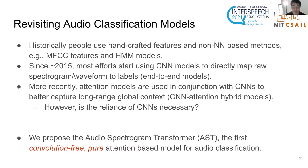Historically, people used handcrafted features and non-neural-network-based methods. And since 2015, most efforts started using CNN models to directly map raw spectrum or waveform to labels. And more recently, attention models are used in conjunction with CNNs to better capture long-range global context. We call these models CNN attention hybrid models.